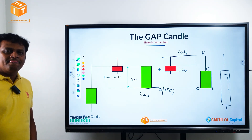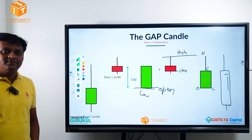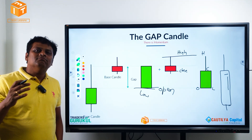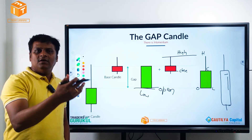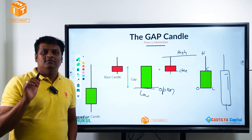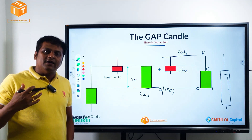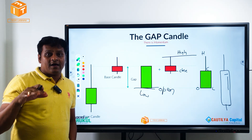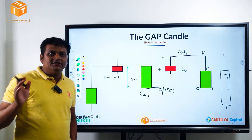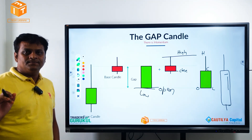A price action trader is not a breakout trader or a support-resistance trader — he is a retracement trader. He's not like a cheetah chasing a deer. The price action trader is like a tiger who waits on the riverbed for his prey to come towards him, and jumps at the appropriate moment when the prey is vulnerable. It's an entirely unique concept.